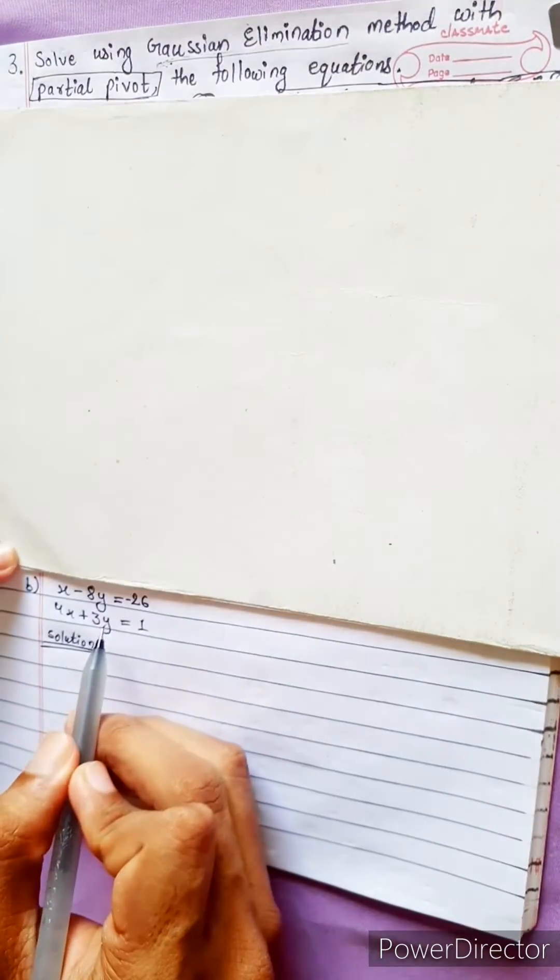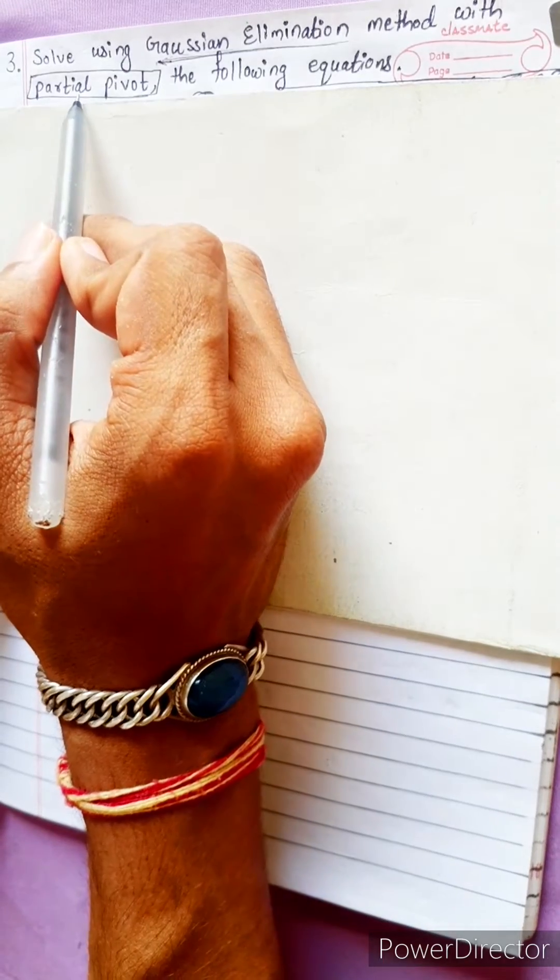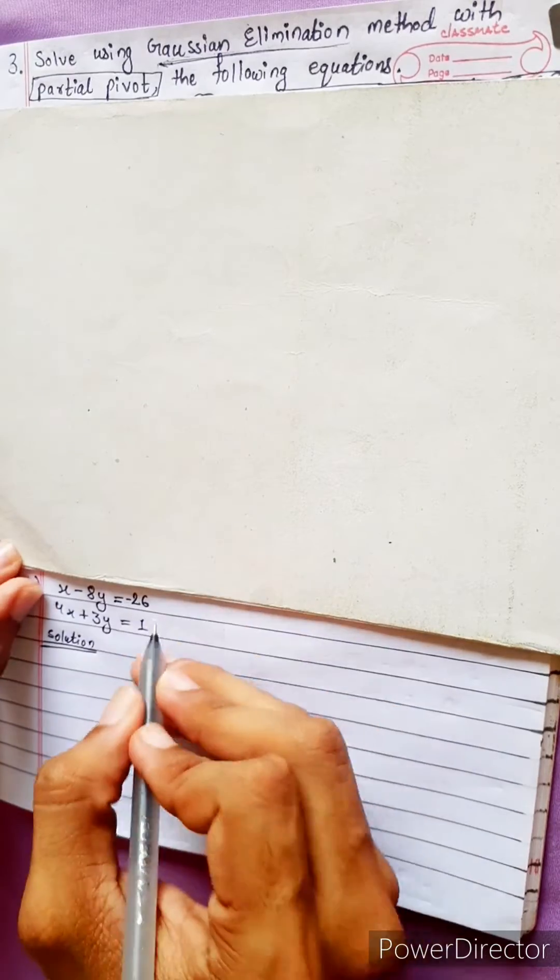This is a new type of question. Solve using Gaussian elimination method with partial pivot. In partial pivot, we arrange in descending order with highest power first.